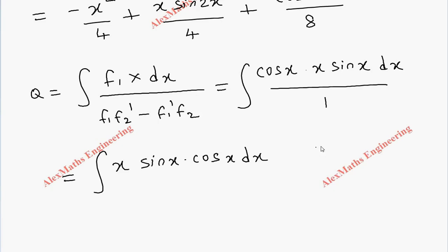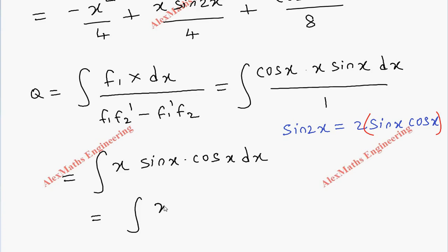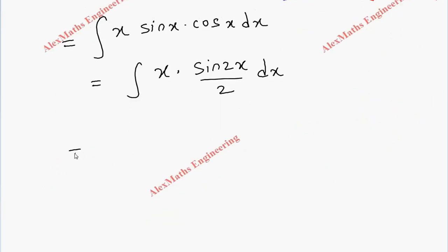For integration, we use the identity sin 2x = 2 sin x cos x, so sin x cos x = sin 2x/2. Taking 1/2 outside: q = 1/2 · ∫x sin 2x dx.